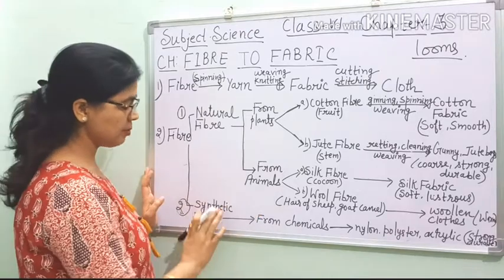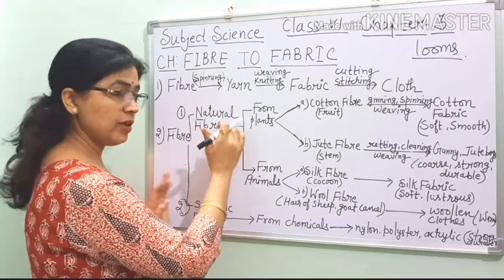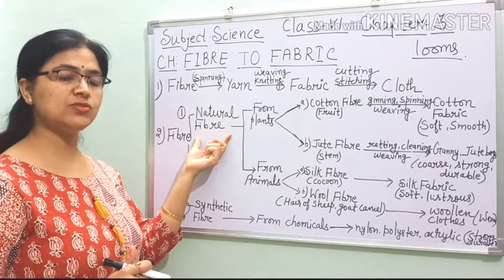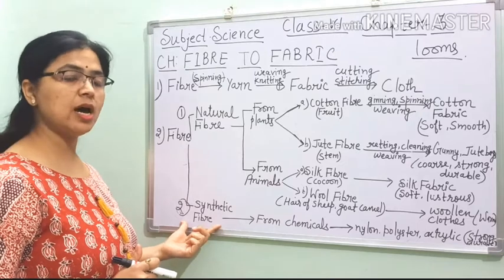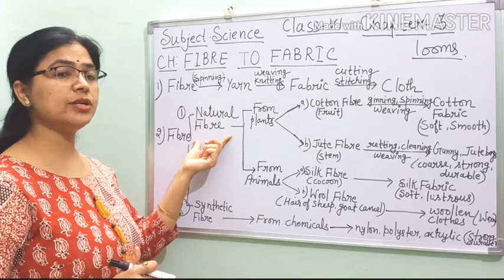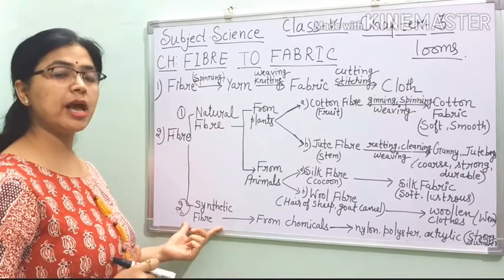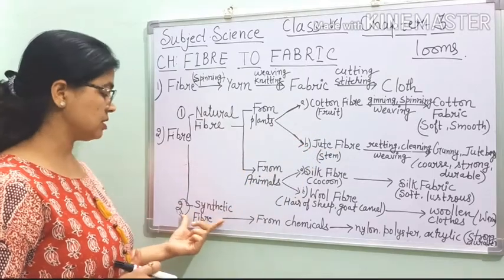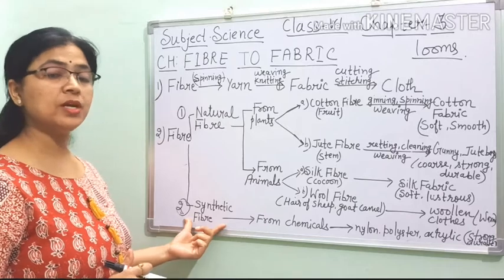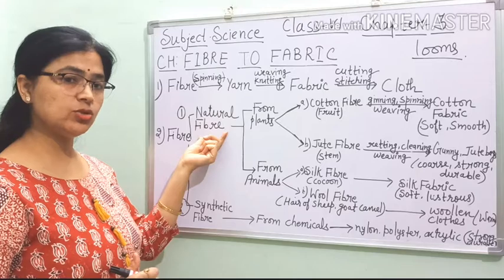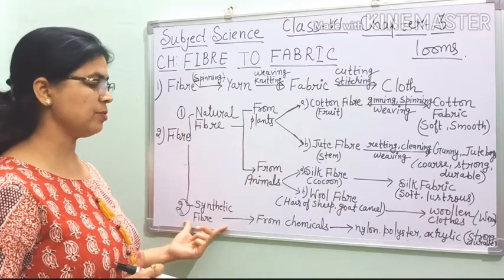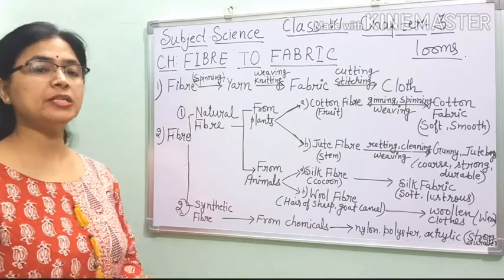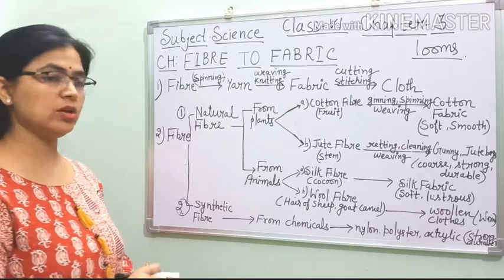Now let us do the differences between natural and synthetic fibres. Natural fibre is made from plants as well as from animals; synthetic fibres are man-made. Second — there is no role of chemicals in natural fibre, but in synthetic fibre, chemicals are used. Third — natural fibres are costly, but synthetic fibres are cheap. Fourth — natural fibre comes from plants and animals; synthetic fibre comes from chemicals and man-made processes.